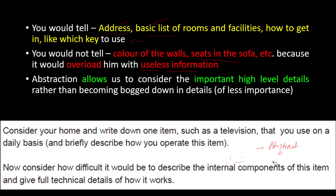Another example: a person using a TV remote doesn't need to know whether it works with infrared or some other frequency. He just knows that pressing one button switches the TV on, and pressing another switches it off. These internal details are hidden from the user — that's the understanding of data abstraction.